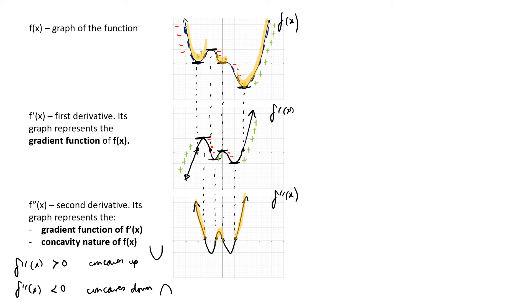When the curve concaves down, f double dash x is negative. So you can see this section here where the curve concaves down, and f double dash x is negative for that section.